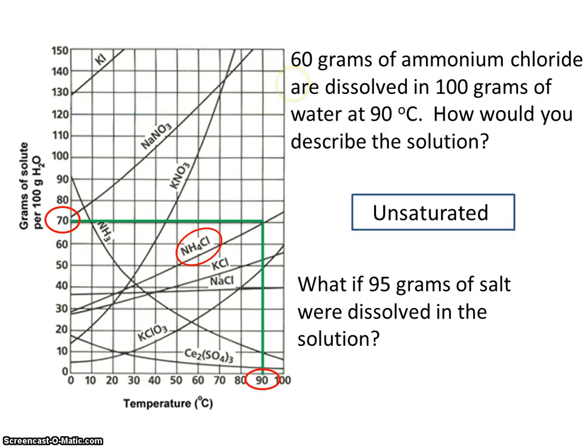What if 95 grams of salt were dissolved in the solution? Well, once again, the saturation amount is 70, so if we did have 95 grams dissolved in there, that would be a supersaturated solution. It would be unstable and temporary.